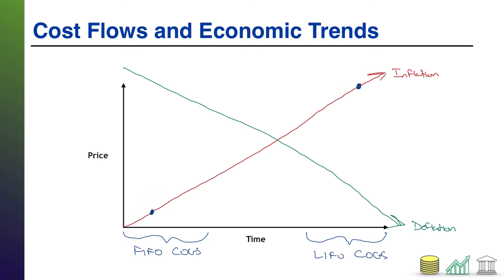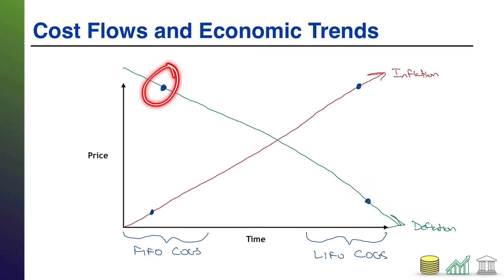The opposite holds true in a deflationary period. In deflation, FIFO cost is coming from way up there at high prices, whereas LIFO costs are coming from way down here at low prices. So if you think of cost of goods sold as something that brings down net income, in a deflationary period LIFO has an advantage — LIFO is going to report higher net income than a FIFO company that has that higher cost of goods sold.